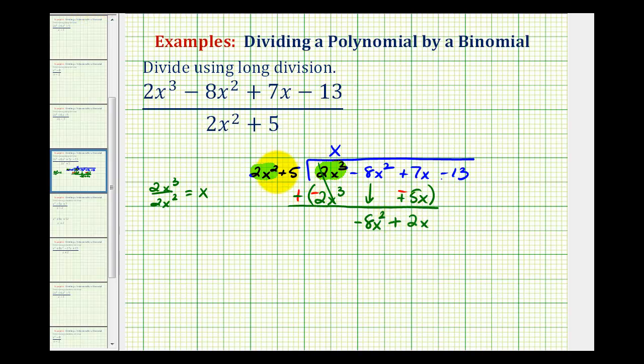And now we're only concerned about the first term of the divisor and this first term. And again there's two ways to find the next term of our quotient. We can ask what times 2x² would be equal to negative 8x². If we know that's negative 4, we can go up here and write minus 4.